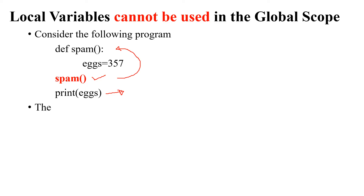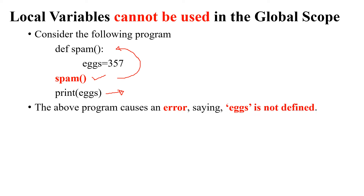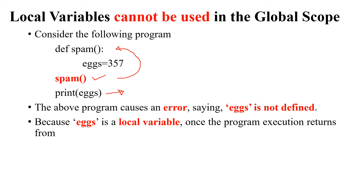The moment execution comes out of the function, I'm trying to print x — so will it print 357? The answer is no. The above program causes an error saying the variable x is not defined. The variable x is defined inside the function called spam, so it is a local variable. But I'm trying to access it outside the function in the global scope, which causes the error. Once the program execution returns from spam, its local scope is destroyed.